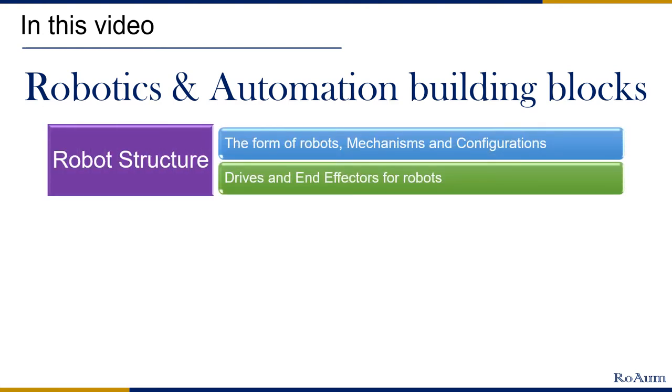Robot Structure: The robot structure is basically the form of robot and its mechanisms that are powered by drives to perform an intended function with the use of end effectors to interact with the job environment.